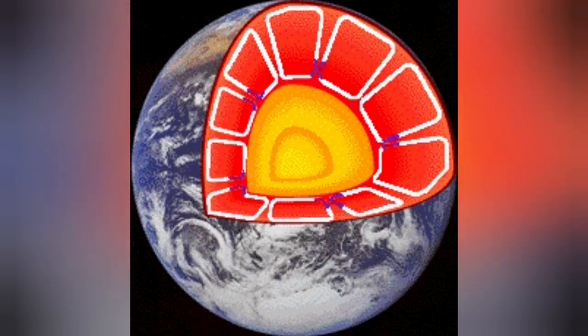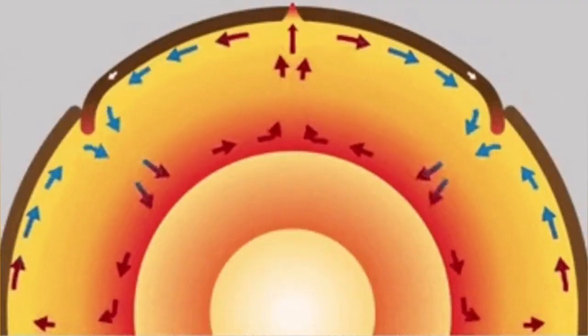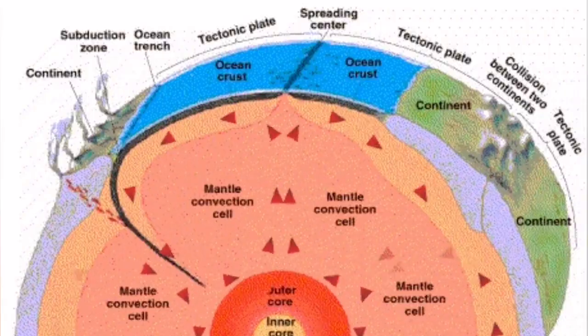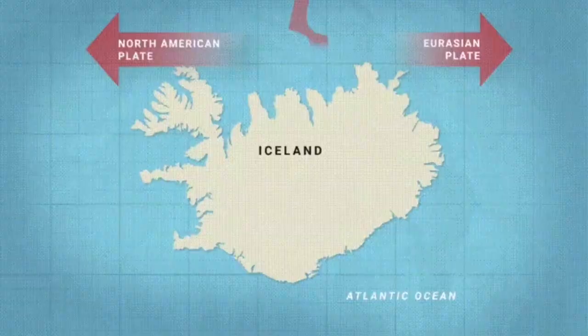This heat creates convection cells through the mantle of the Earth, which rises to the surface and cracks the hardened solidified crust of the Earth, we call it lithosphere. And through these cracks, magma can erupt.